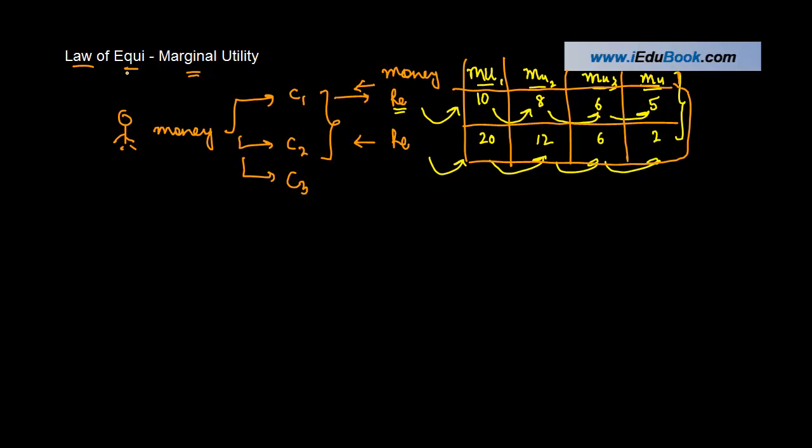Now what this law of equi-marginal utility says is, equi obviously is an extraction of the word equal. The law says that the consumer is going to allocate expenditure on various commodities, let's say C1 and C2.